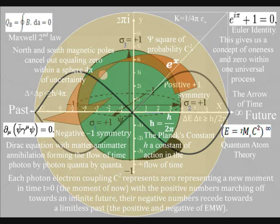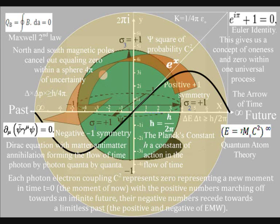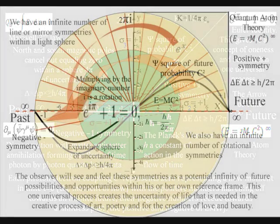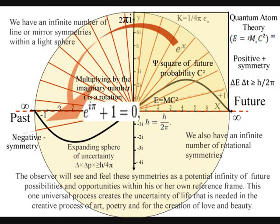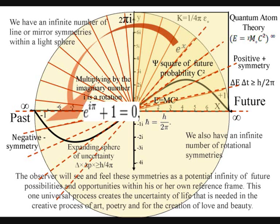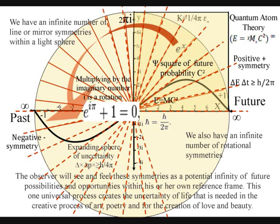This whole process can be seen as a process of spherical symmetry forming and breaking. There is an infinite number of line symmetries within a sphere and also an infinite number of rotational symmetries. This is where the infinities come from that we find in mathematics, and this process also forms the potential infinity of possibilities and opportunities of everyday life.